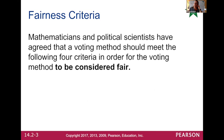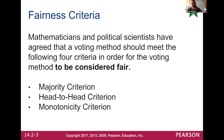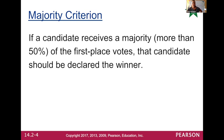Mathematicians and political scientists have agreed that a voting method should meet the following four criteria in order for the voting method to be considered fair. So it's these four that I just mentioned. And so what are they? These are the definitions that will be provided for your next test. So the majority criterion is if a candidate receives a majority or more than 50% of the first place votes, that candidate should be declared the winner.